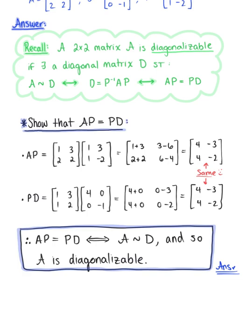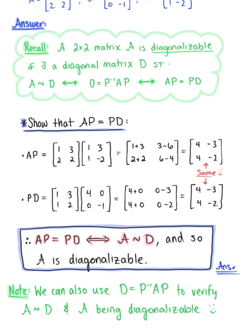Keep in mind that we used A times P equals P times D to verify that matrix A was similar to matrix D. But you could have also used the logically equivalent statement that matrix D is equal to the inverse of matrix P times matrix A times matrix P to verify A is diagonalizable. The only thing with that approach is you have to find the inverse of matrix P, but since P is a 2 by 2 matrix, that won't take too long. In this example I gave you matrix A, the diagonal matrix D, and matrix P — so you may be asking how do we find such a diagonal matrix or matrix P? Have no fear; we will be exploring how to do this later in this section.